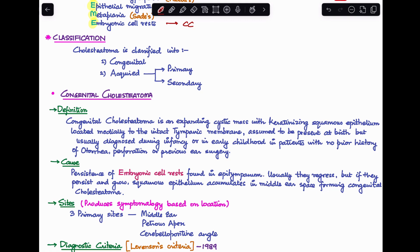I'll discuss each one separately, beginning with congenital cholesteatoma. Congenital cholesteatoma is an expanding cystic mass with keratinizing squamous epithelium located medially to an intact tympanic membrane. This part is very important - it has an intact tympanic membrane and is usually assumed to be present at birth, but usually gets diagnosed during infancy or early childhood in patients with no prior history of otorrhea, perforation, or previous ear surgery.